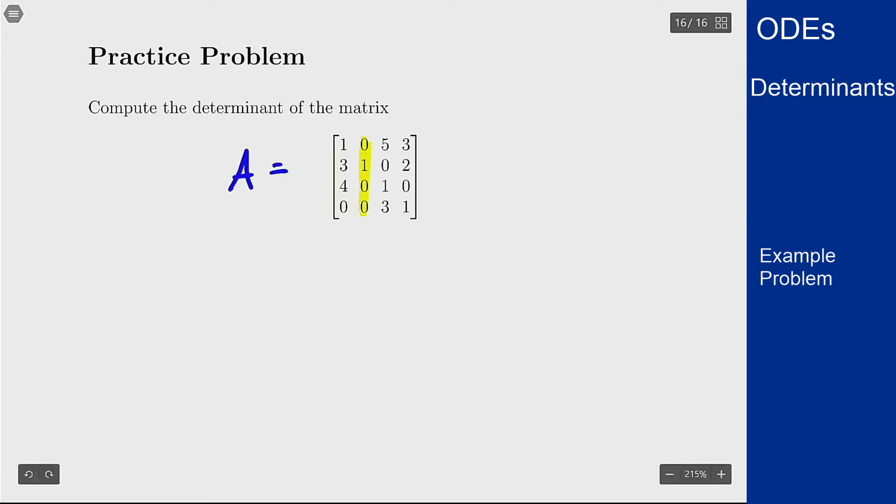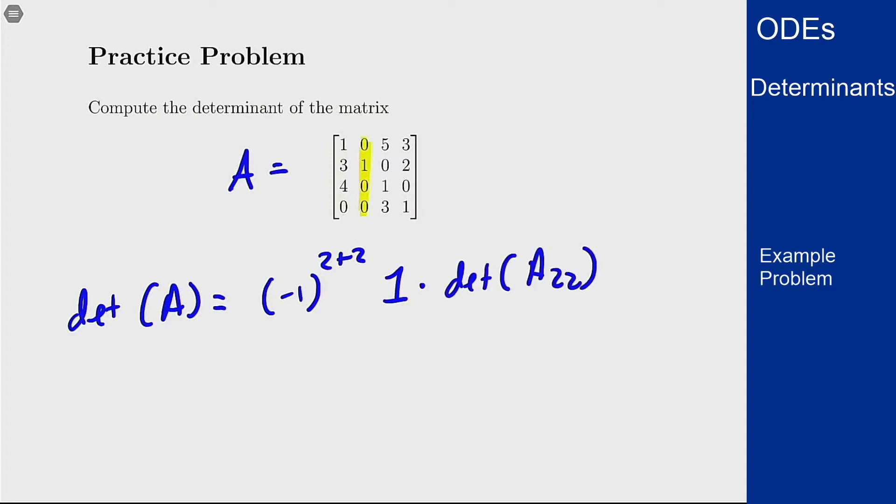So if we call this matrix A, we know the determinant of A by expanding along column 2. It's going to be negative 1 to the—the only one that's non-zero is the second entry—so to the 2 plus 2 power for second row second column, times the value there which is 1, times the determinant of the minor A22. Now what is that minor? That means I want to remove the second row and second column from the matrix, so the green and yellow part there.